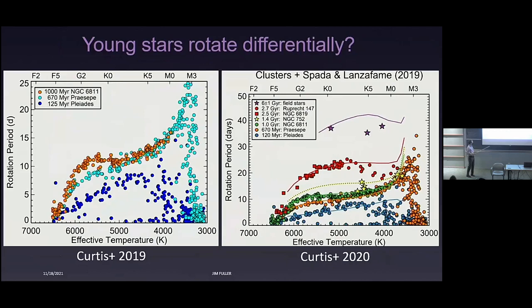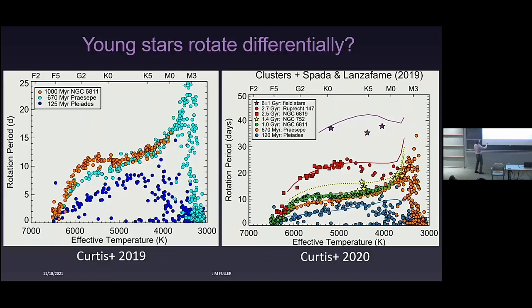There are also peculiar clues from measurements of surface rotation rates of large samples of stars, especially in clusters. Results from Jason Curtis show that as clusters age, stars spin down. But bizarrely, NGC 6811 and Praesepe, which differ in age, have about the same rotation periods for F and K stars, but quite different periods for solar-type stars. These stars seem to pause their spin-down for a few hundred million years, which can potentially be explained by core-envelope decoupling.